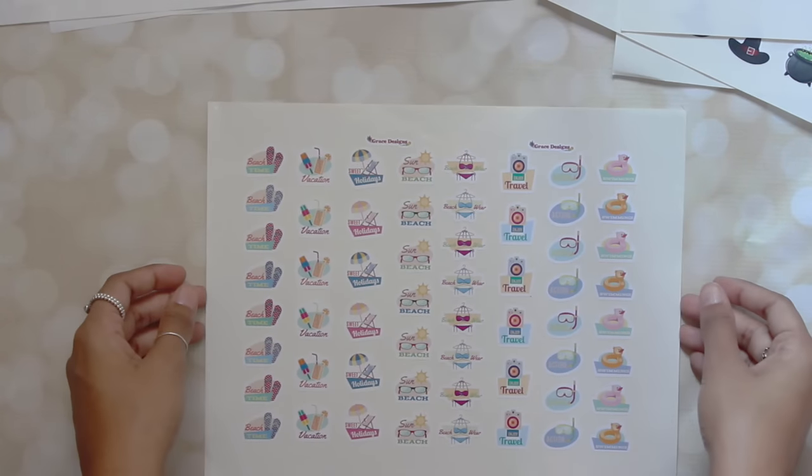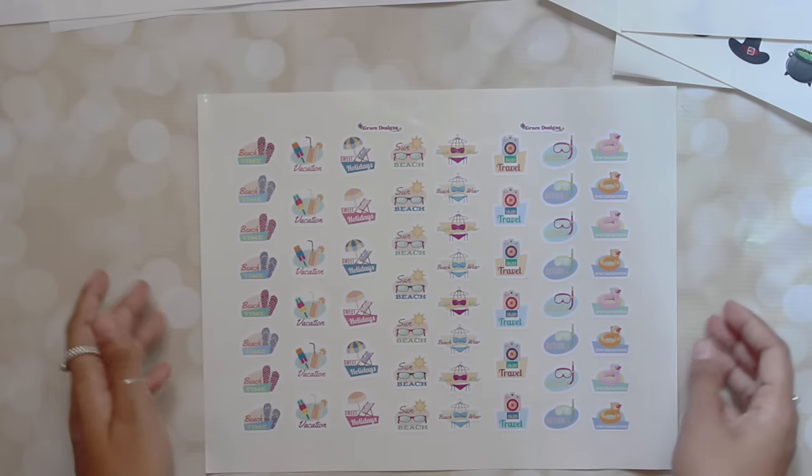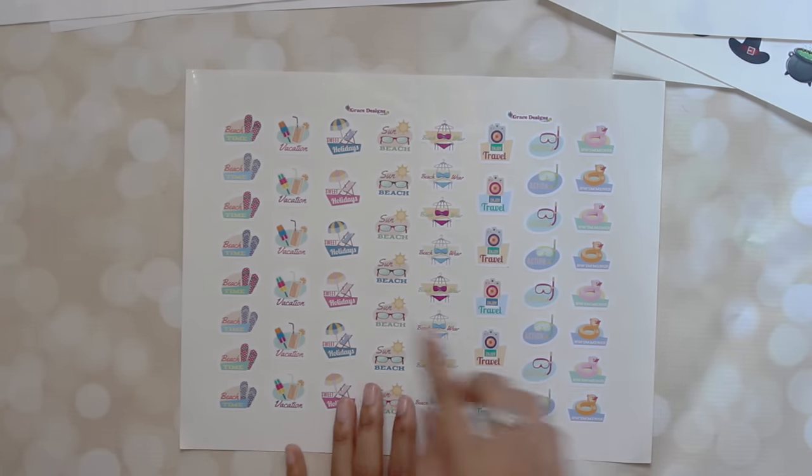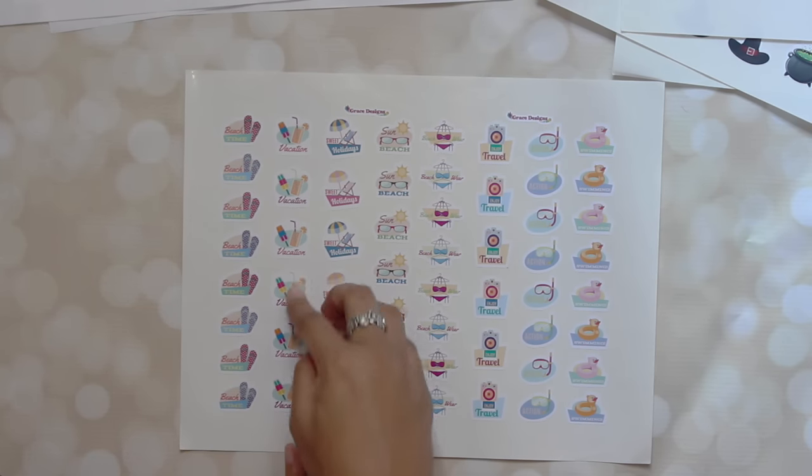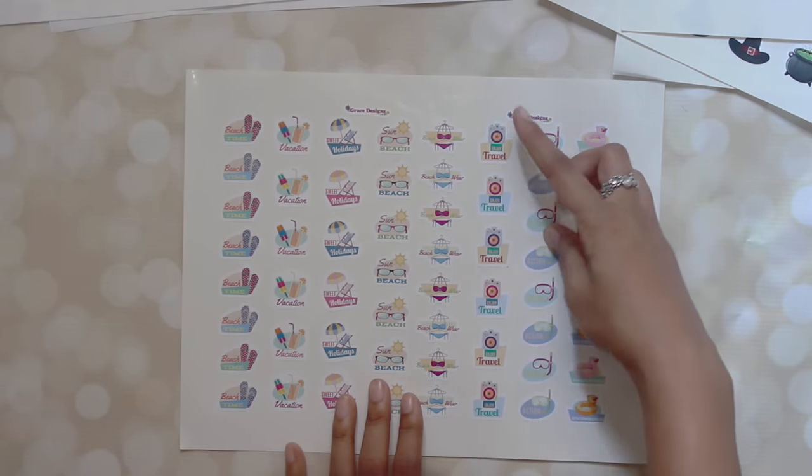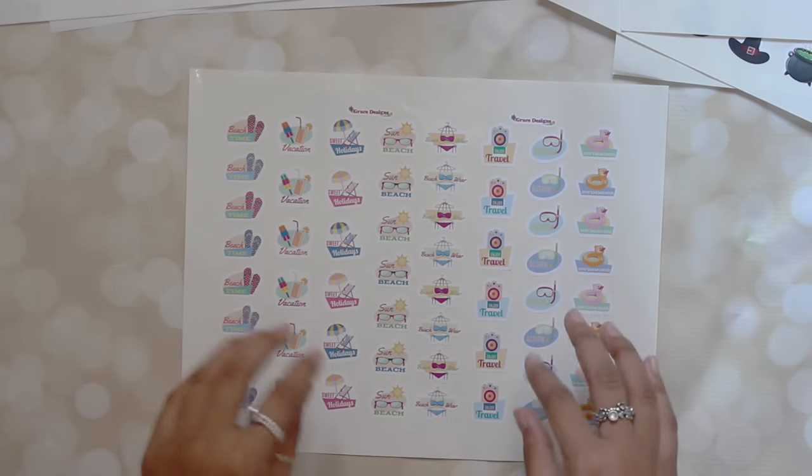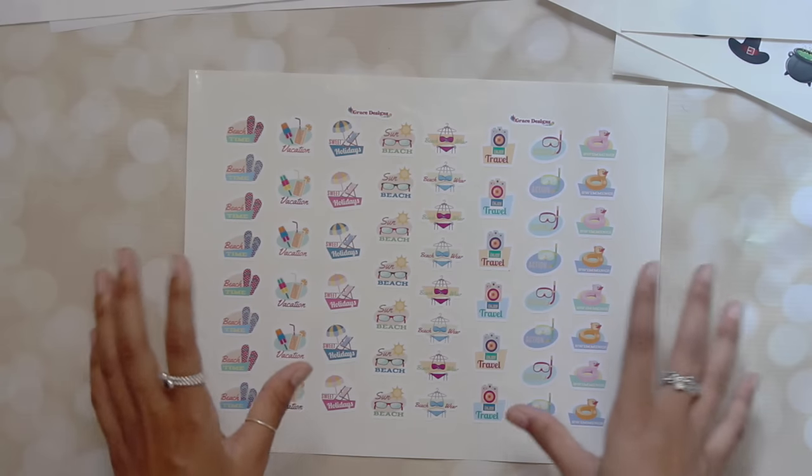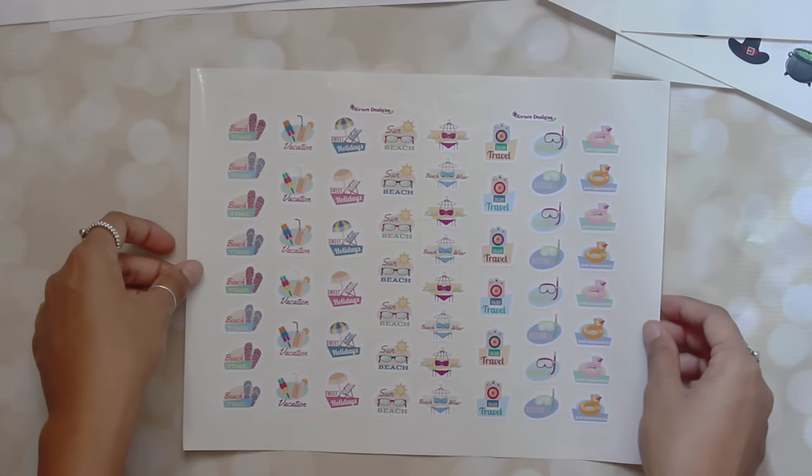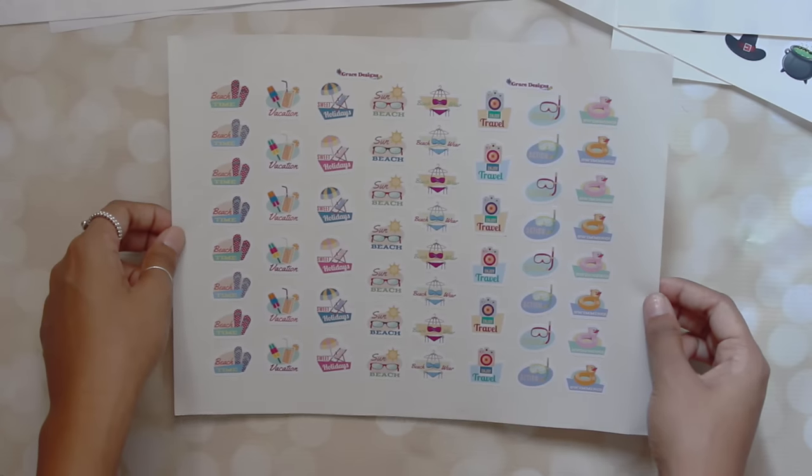Then she sent me this, which is kind of a mix of things but it really reminds me of summer. Now that I think about it, I think it's a summer themed spread. You have beach time, vacation, sweet holidays, sun beach, beach wear, enjoy travel, swimming. So these are actually really great for scrapbooking as well, not just for planning. So I really recommend these if you're a scrapbooker as well, specifically this sheet of stickers. I live in New York, so summer is kind of going bye-bye right now, but that's okay. I always have next summer.